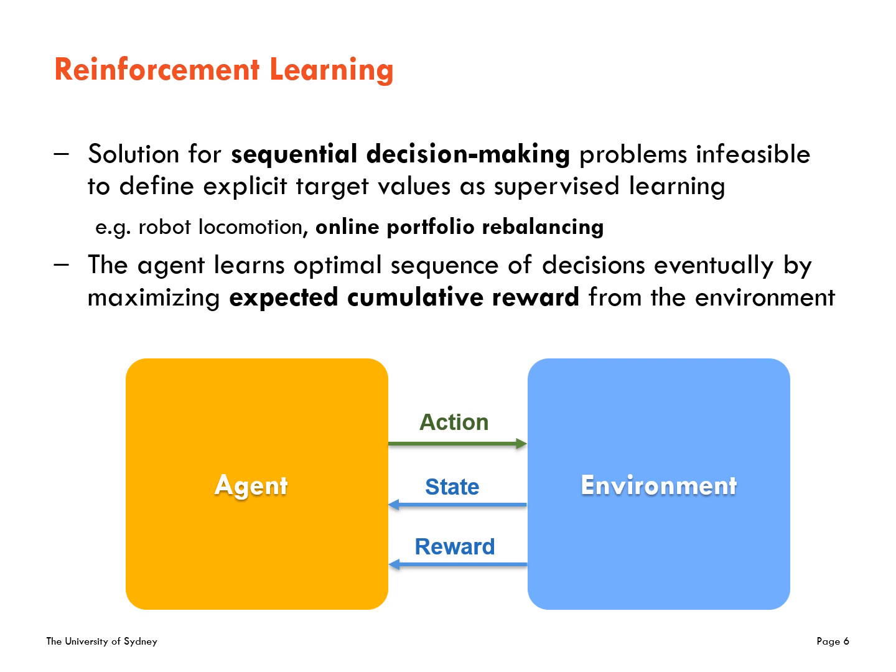So, what is reinforcement learning? We can say it is a solution for sequential decision-making problems like video games, robot walking, or portfolio optimization, which can hardly be solved by general supervised learning. In reinforcement learning settings, there are an agent and an environment. The agent decides actions based on the current state, and the state of the environment changes by that action, providing a reward to the agent in response.